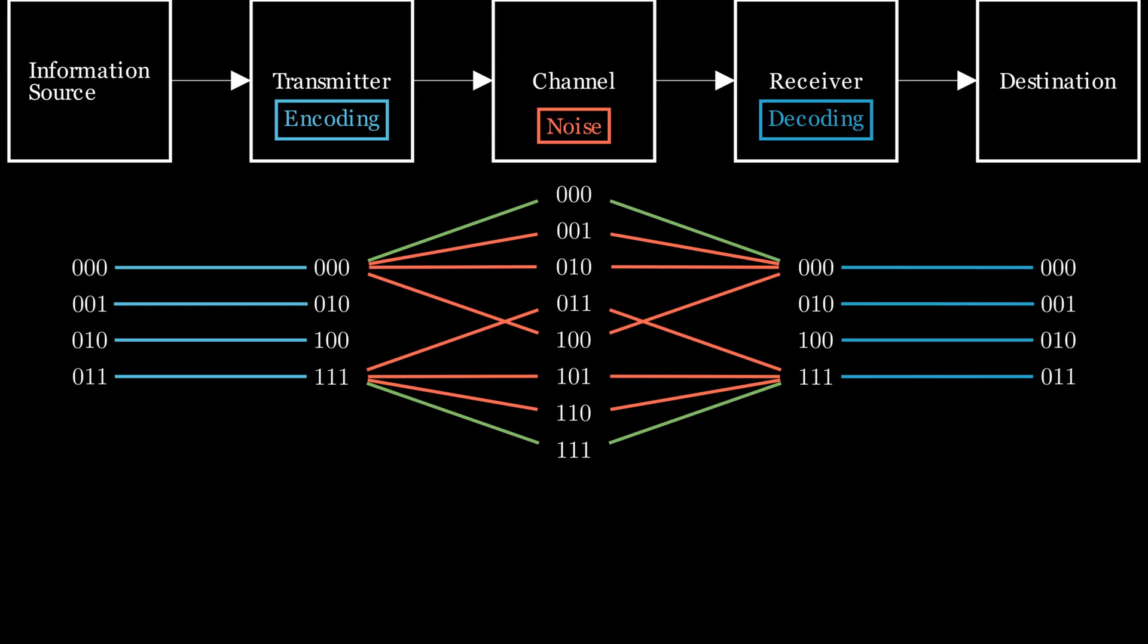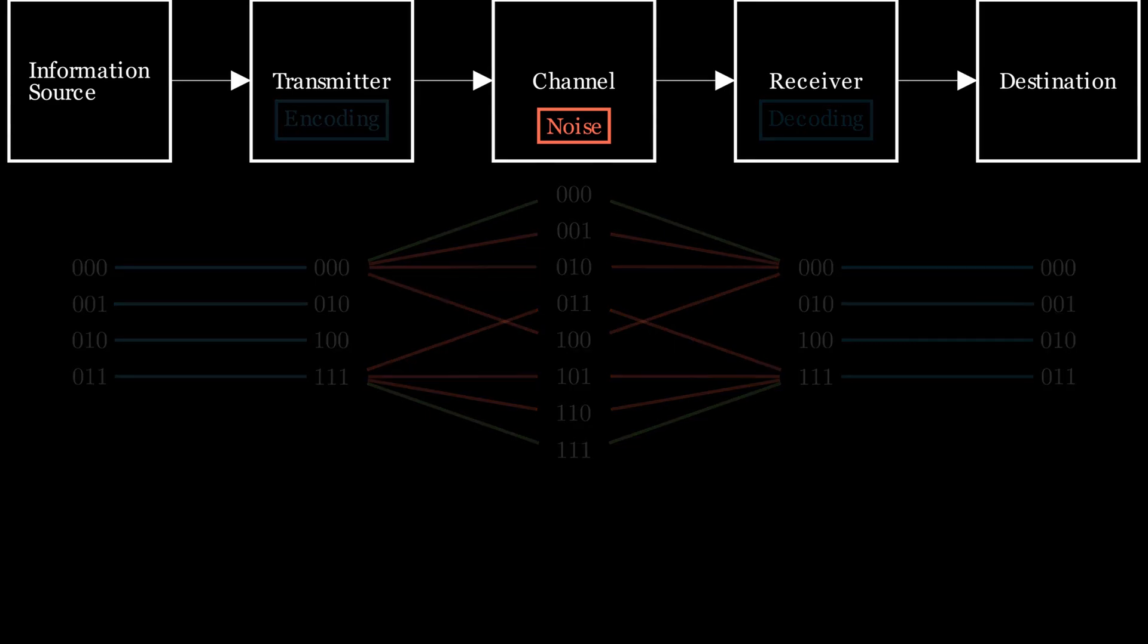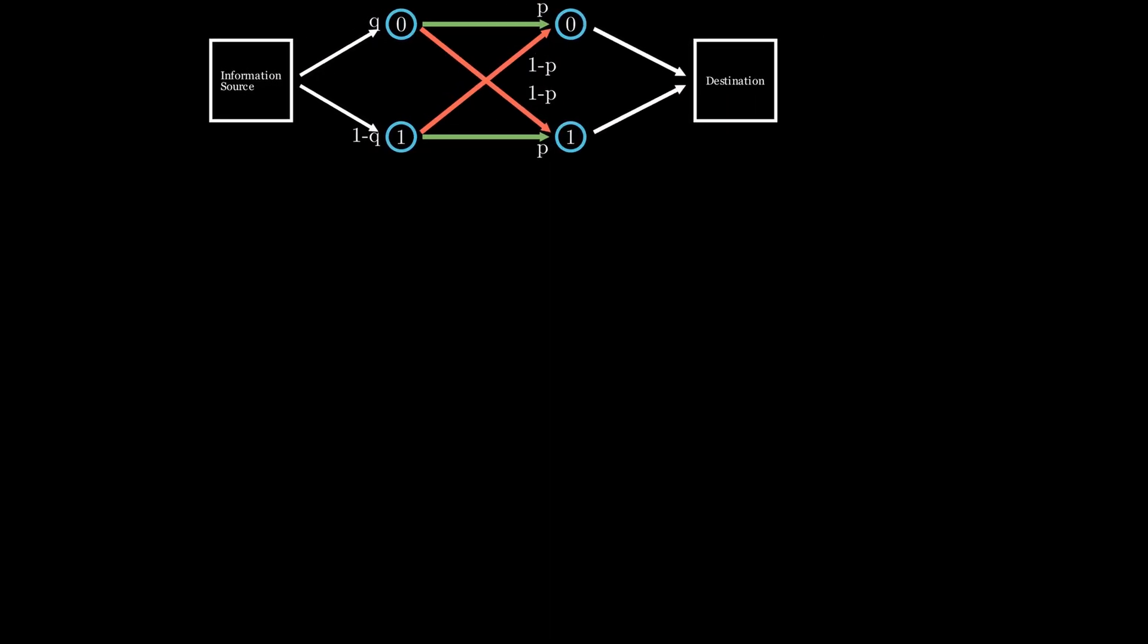With that in mind, it is now time to get an intuition behind the noisy channel theorem. Again, we will be using our binary symmetric channel as an example. So far, we were only using encoding and decoding with a single message. But it is much more efficient when we use something called an extended channel.